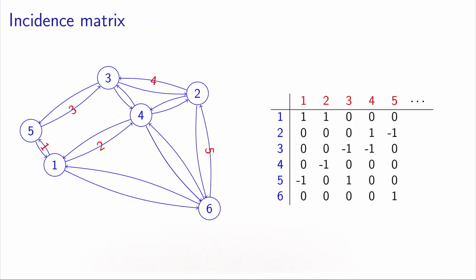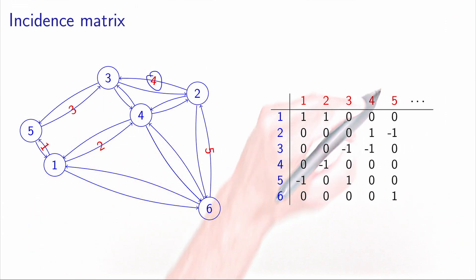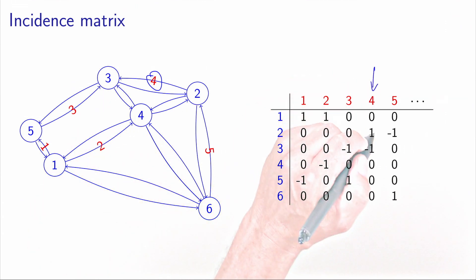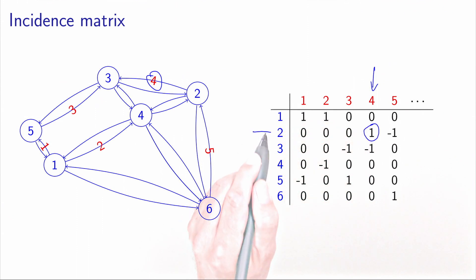The incidence matrix has the following structure. Each column contains exactly two non-zero entries. If the column corresponds to arc ij, there will be an entry 1 at row i and an entry minus 1 at row j. For example, arc 4 goes from 2 to 3, so in column 4 we have a 1 at row 2 and a minus 1 at row 3.